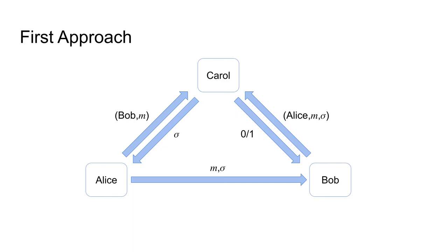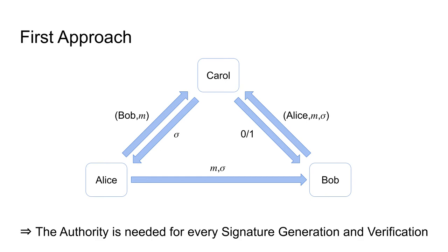After defining unforgeability and indistinguishability-based attribute hiding, we consider some construction approaches. A first approach is to rely on Carol: Alice submits her message to Carol together with Bob's identifier and receives a signature Sigma in reply, and Bob can send the signature with the message and Alice's identifier to Carol for verification. Unfortunately, this solution requires the involvement of Carol for every signature generation and verification, but we would like Carol to be needed only for generating public parameters and keys, such that Alice can generate signatures on her own and everyone can verify them.